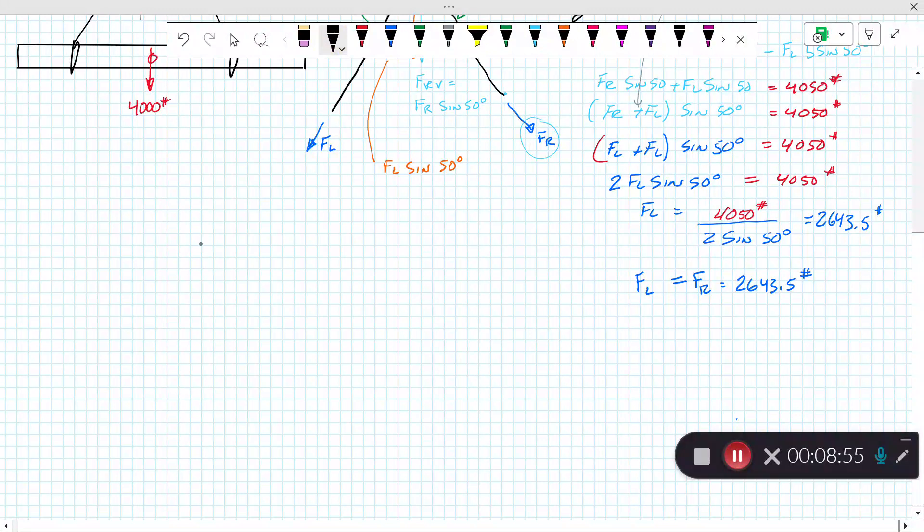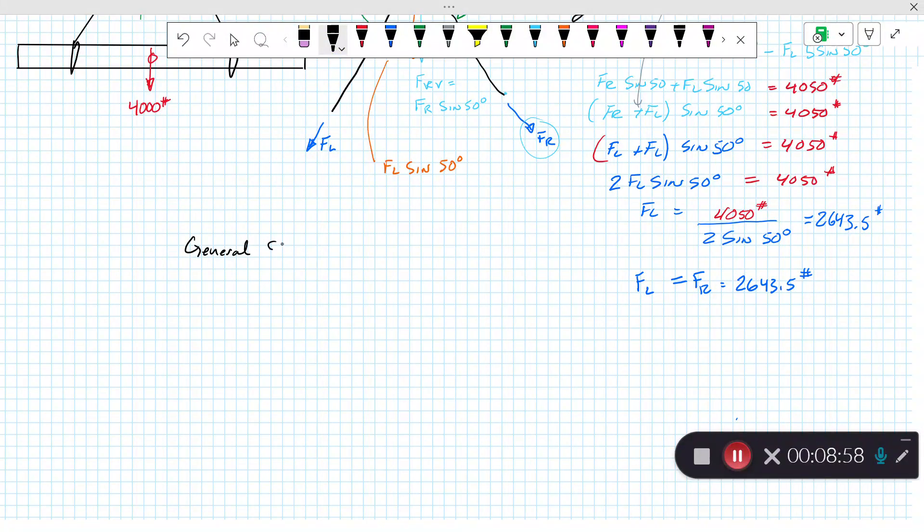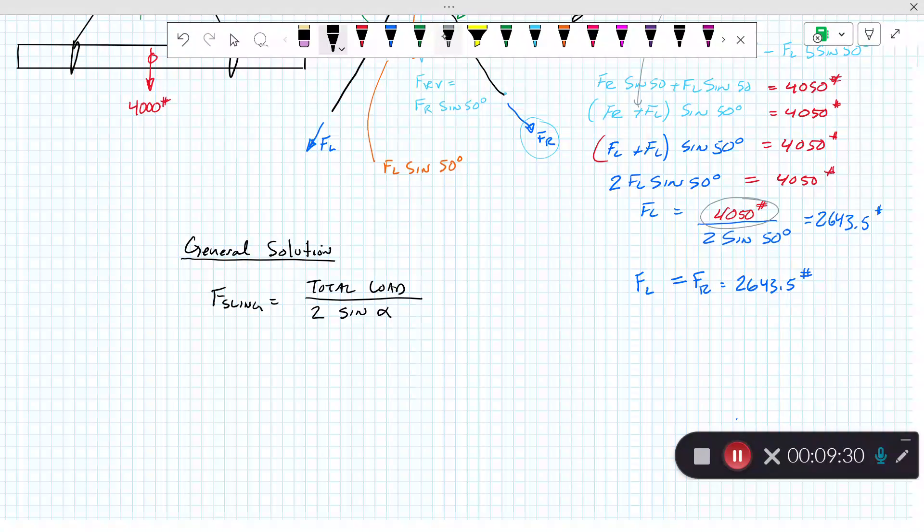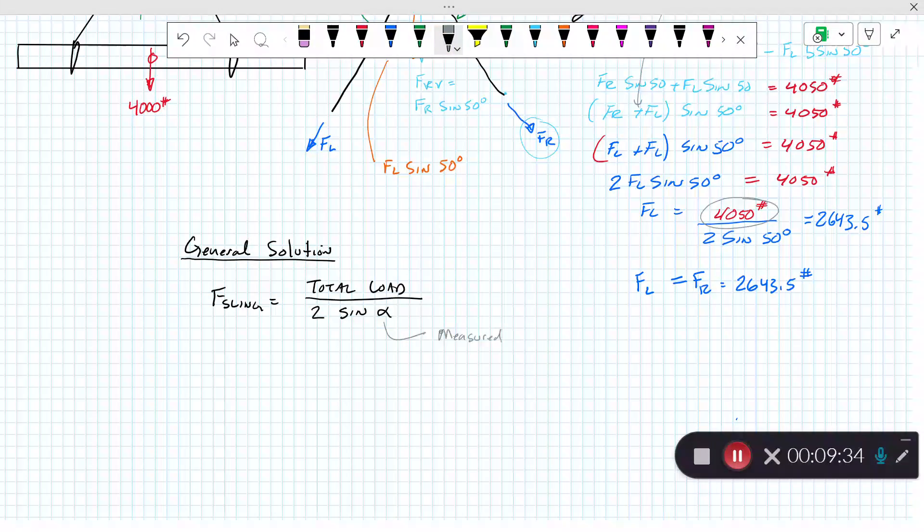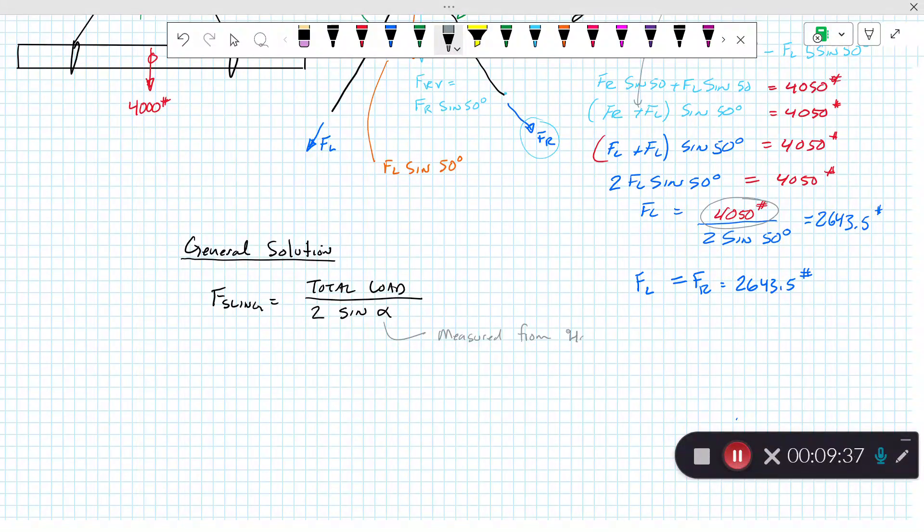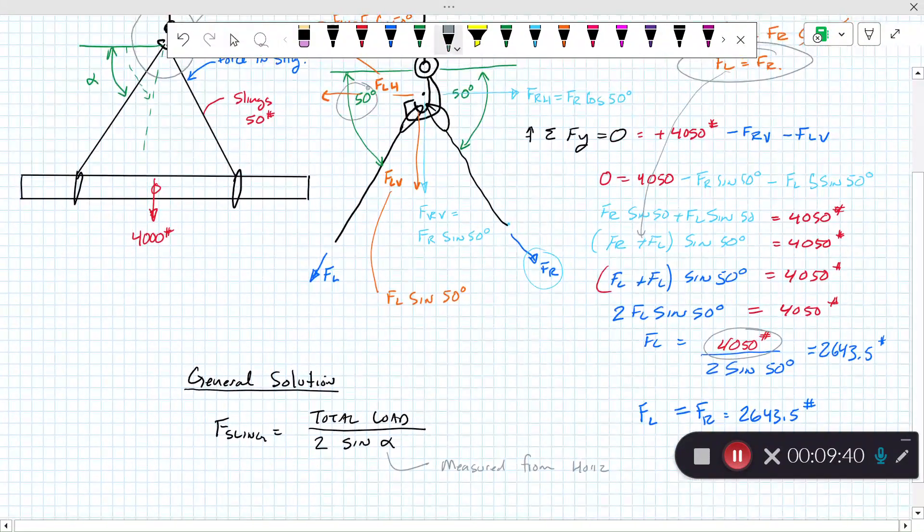The general solution here, assuming that the angles are the same in the sling, would be the force in the sling is equal to the total load divided by 2 times the sine of the angle. And that angle, we note, has to be measured from the horizontal.